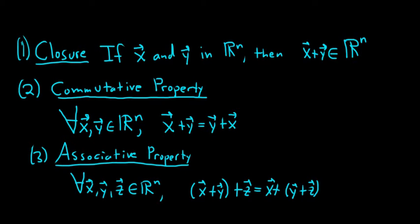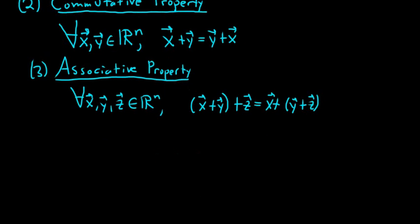So the associative property of vector addition. This follows directly from the associative property of real numbers. It's a direct consequence. Maybe we should prove it really quickly, just a terse proof, so check it out.